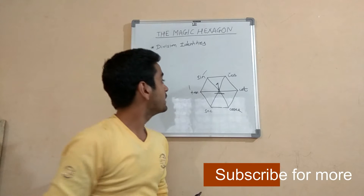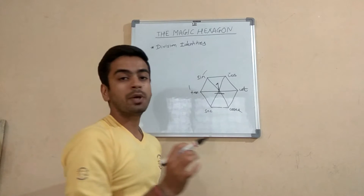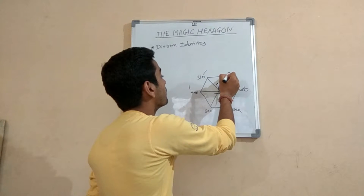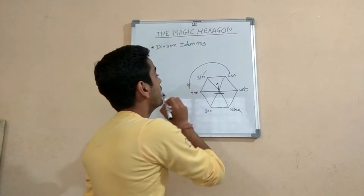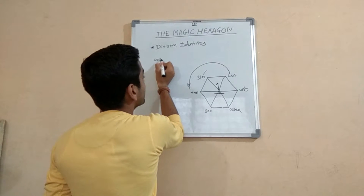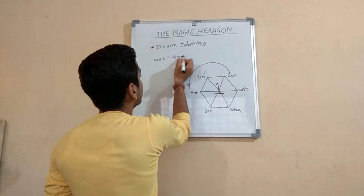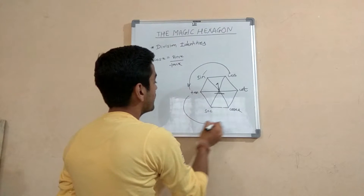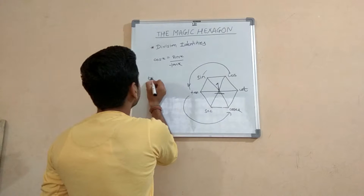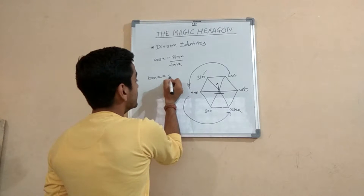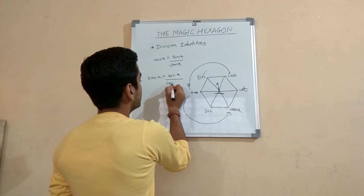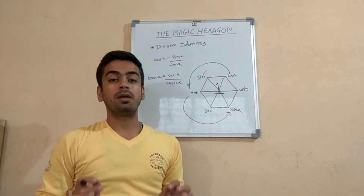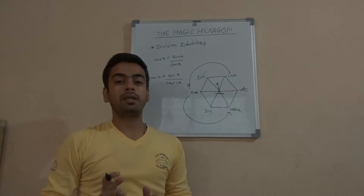For the counterclockwise identities you go in the same manner but in reverse. Going from cos to tan, you can write cos x is equal to sin x divided by tan x. You can also write tan x is equal to sec x divided by cosec x. This is a very simple trick which we can use in mathematics.